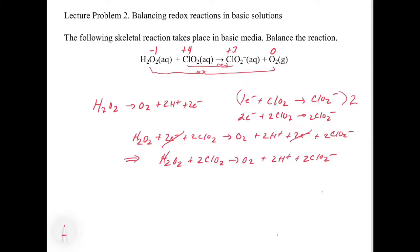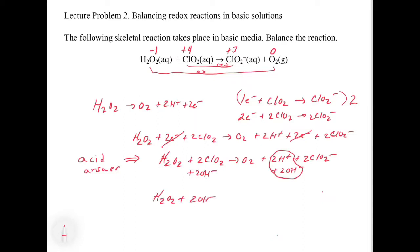The problem is we can't have these H+ hanging around. So let's go on to step five: note the number of H+ ions in the reaction, then add the same number of OH⁻ ions to both sides of the reaction. So we're going to add two OH⁻ on the left side and two OH⁻ on the right side. Then step six: knowing that H+ will react with OH⁻ to give water, combine H+ and OH⁻ to give H₂O molecules, and cancel out H₂O molecules that appear on both sides. So if we have H+ and OH⁻ on the same side, they cancel to give water. This gives us: H₂O₂ plus 2 OH⁻ plus 2 ClO₂ gives O₂ plus 2 H₂O plus 2 ClO₂⁻.